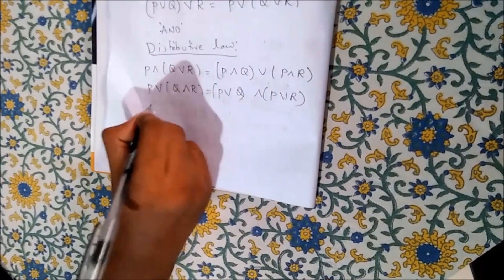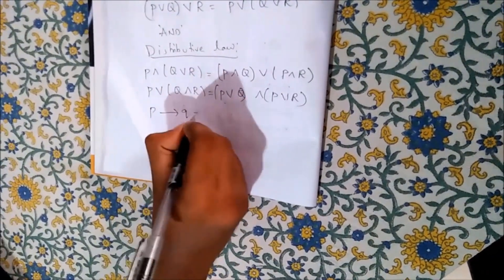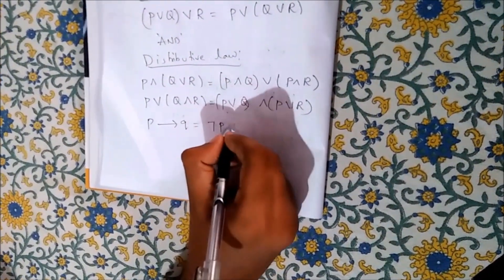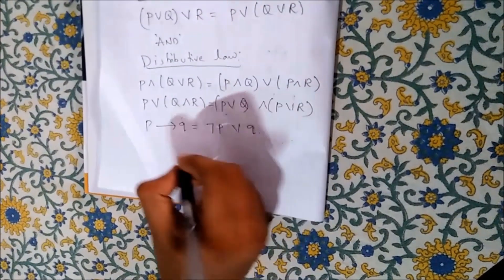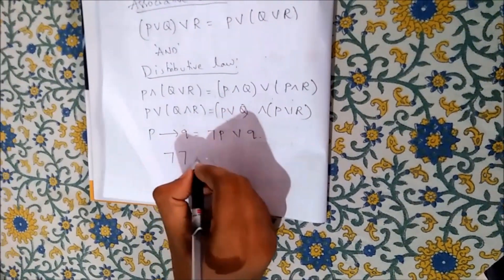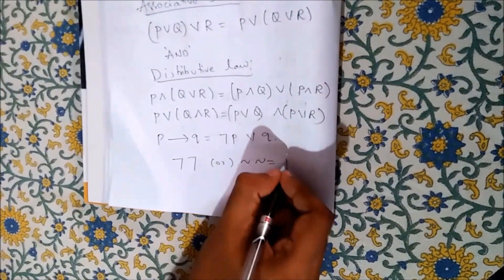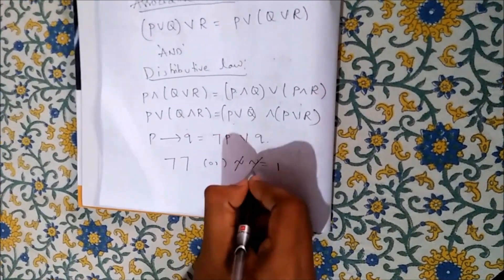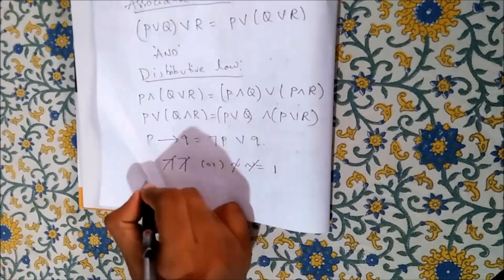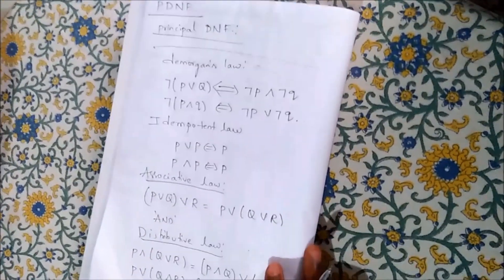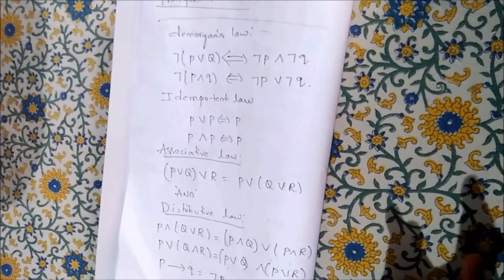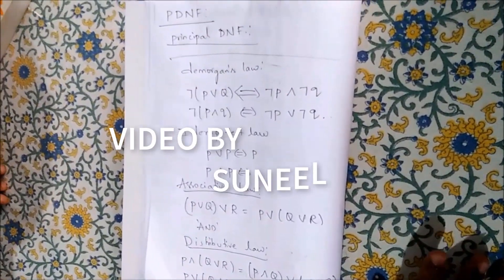And finally, if we come across P implies Q, then the formula will be negation P or Q. If we see double negation, then we will simply replace it with one since negation negation will be cancelled. These are some of the laws you must learn for solving PCNF or PDNF or any other problems.